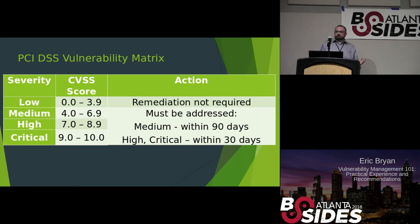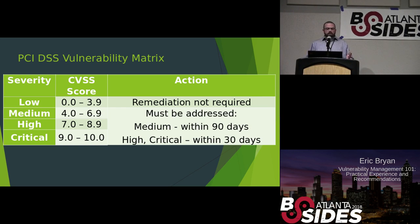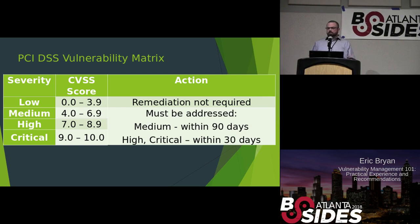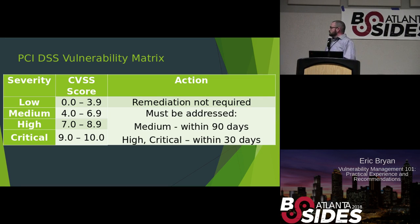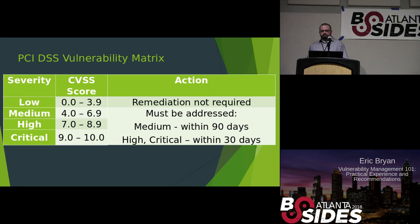Now that we have our adjusted score, we need to determine if the vulnerability should even be addressed and the timeline. On the ten-point scale: low — remediation not required; medium, high, and critical must be addressed. Medium within 90 days, and high/critical within 30 days.